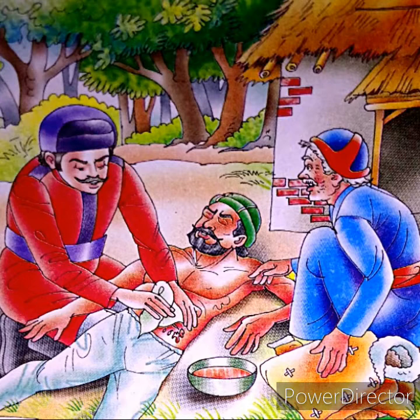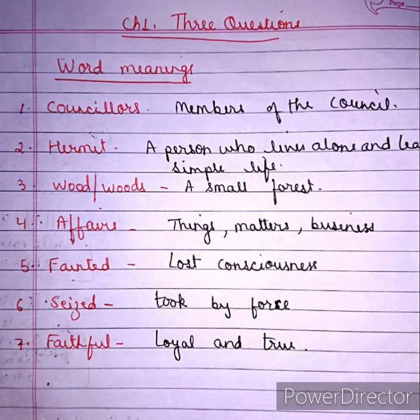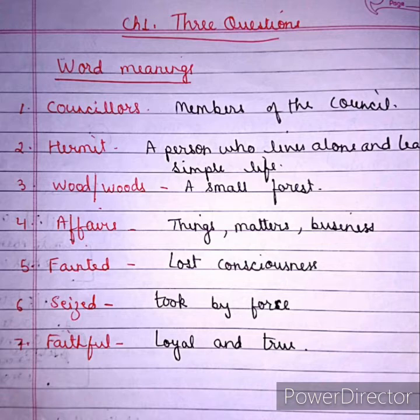You should know what the story is about, the writer Leo Tolstoy, and the main characters. Now we will see word meanings. You have to learn all the word meanings. Word meanings can come in the form of choose the correct option or fill in the blank. One word will be given with four options — one correct and three wrong — and you have to tick the correct answer.